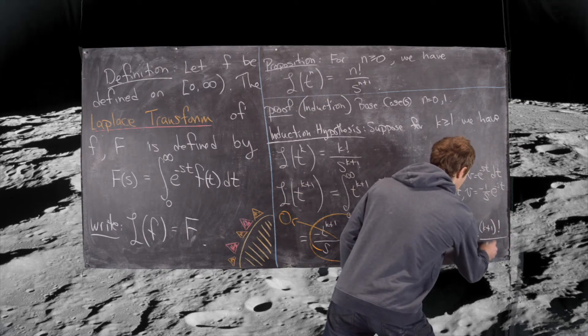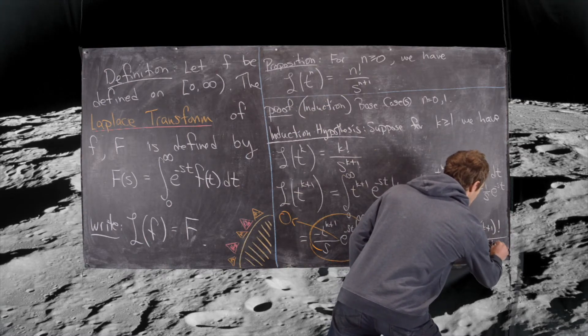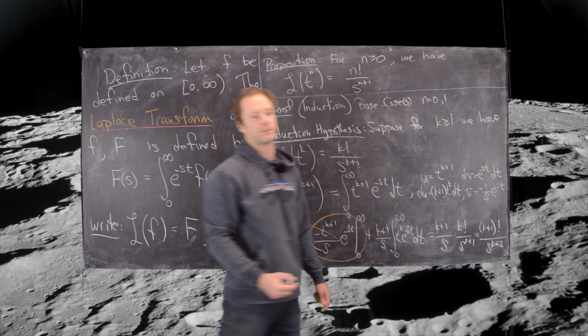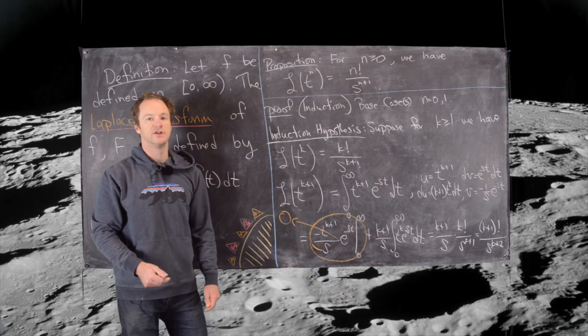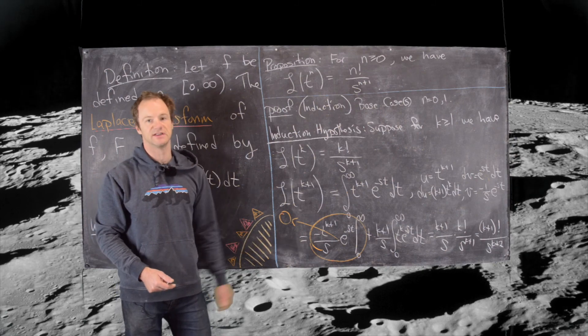But notice that gives us the exact form that we want. Now we have k plus 1 factorial over s to the k plus 2, which means we've proven this formula that we wanted using mathematical induction. This is the end of the proof.